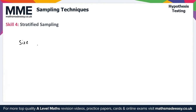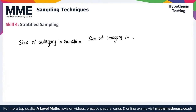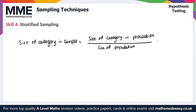The size of a category in the sample equals the size of that category in the population divided by the total size of the population, multiplied by the overall sample size. That gives us everything we need for skill four on stratified sampling.